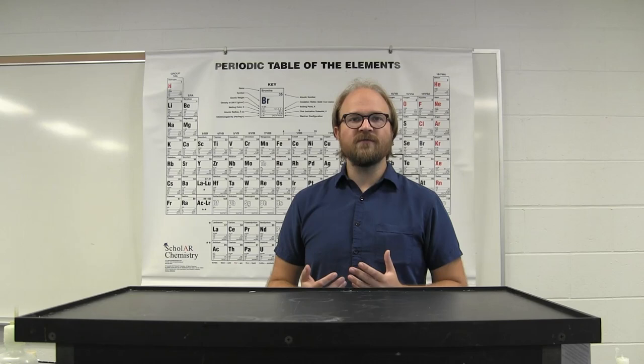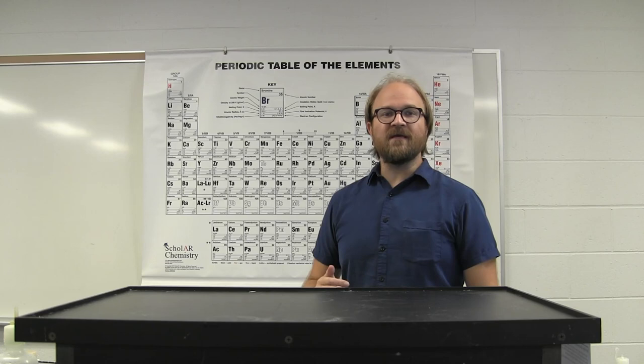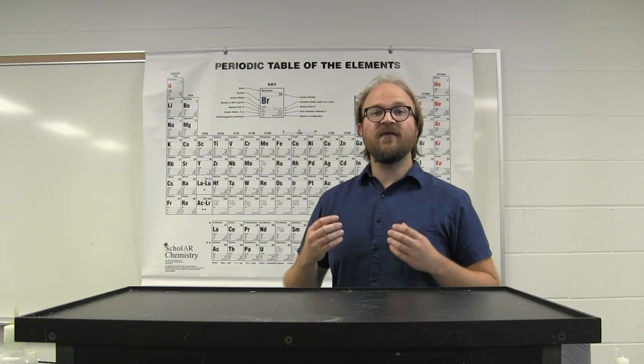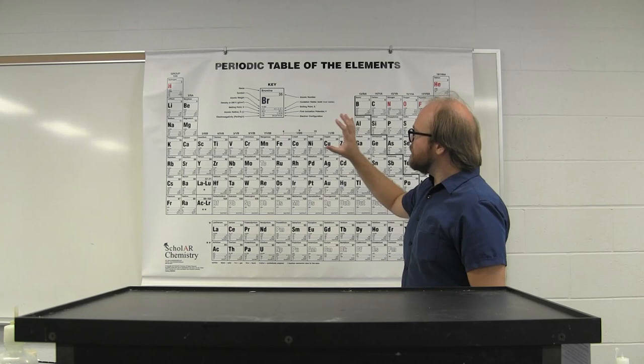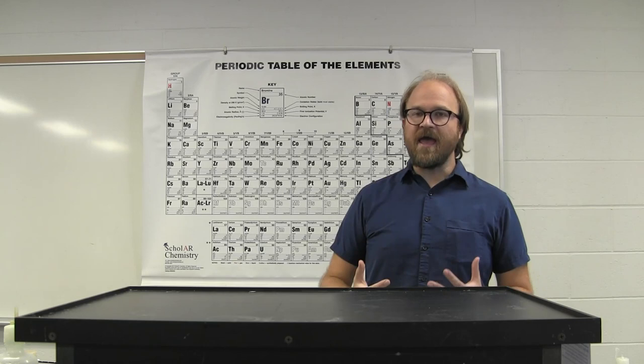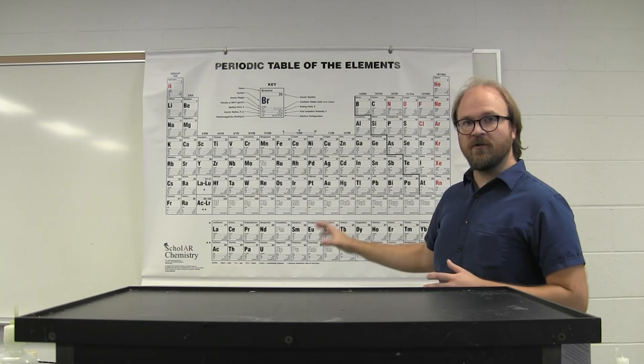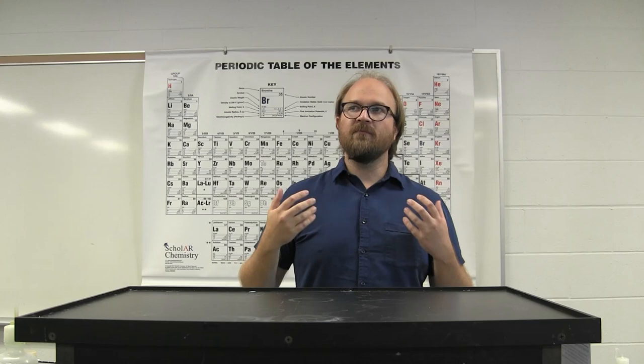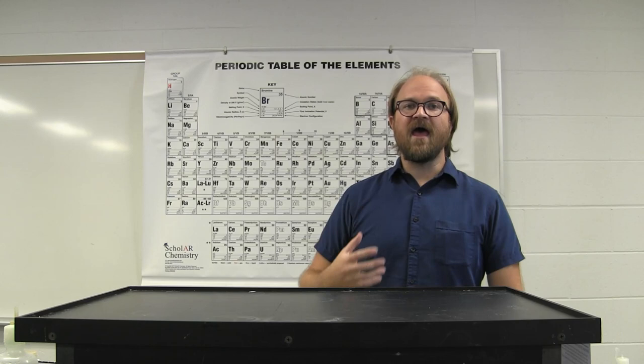The quantum properties of elements are also based on the periodic table. The quantum properties are based on the number of electrons that a specific element would have. The electrons themselves are based on the atomic number. By moving along on the periodic table, you're changing the number of electrons. Electrons can only exist in whole numbers — therefore, they are quantized.